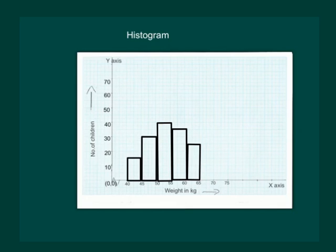Also from the graph we can see that maximum number of children, that is 40, lie in the weight range of 50 to 55 kg, while the minimum number of children, that is 15, lie in the weight range of 40 to 45 kg.